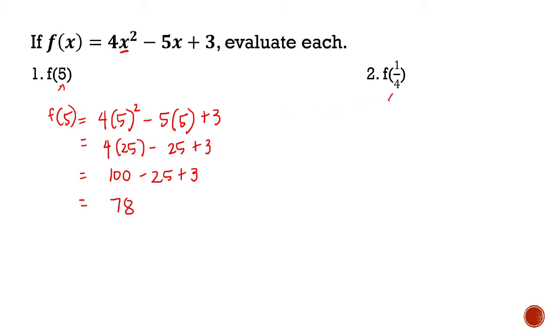What about number 2? The given x value is a fraction. Let's see. f(1/4). Simply substitute 1/4 for x in the function. So it's 4, instead of x, we write 1/4 squared minus 5 times 1/4 plus 3.